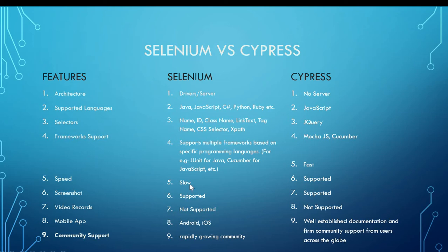Number five: Speed. Selenium is slow because it has many dependencies — a driver as a middleman and other dependencies — making it complex. Cypress, on the other hand, is very fast and easy to set up.